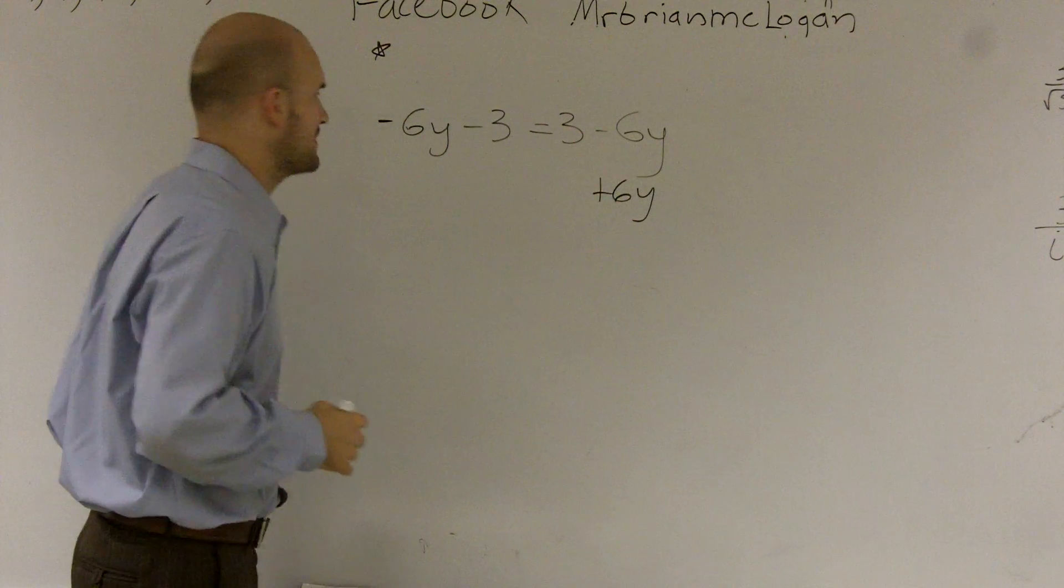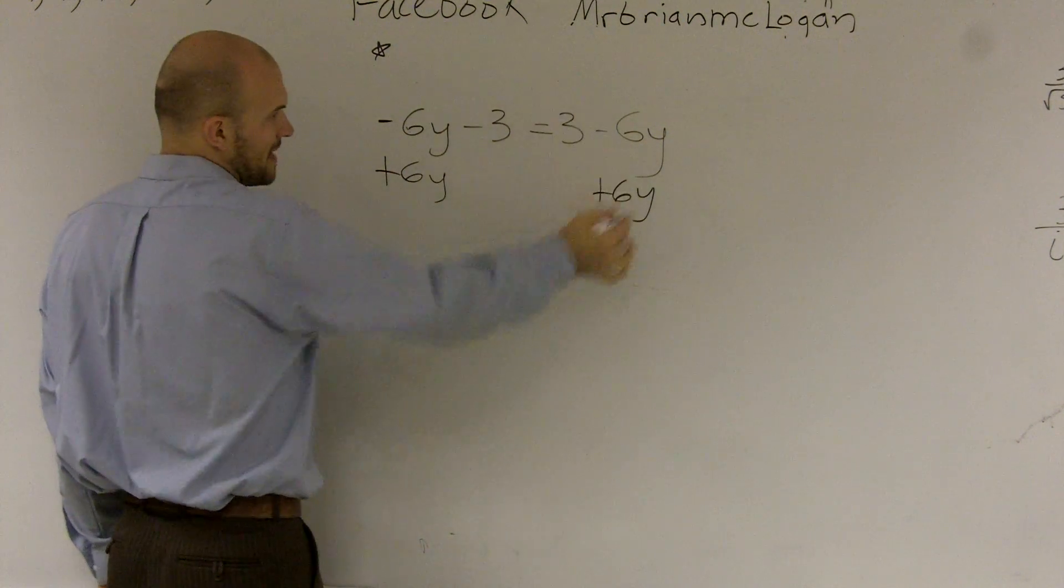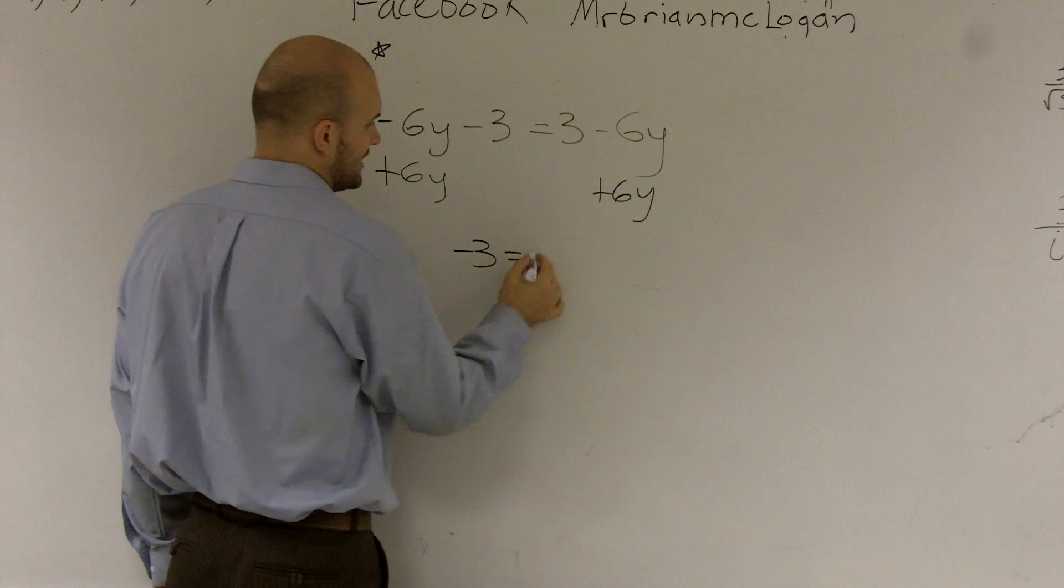This is a negative. So when I add a 6y, this becomes 0 and that becomes 0. I'm left with negative 3 equals 3.